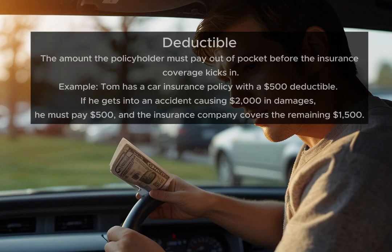Deductible: the amount the policyholder must pay out of pocket before the insurance coverage kicks in. Example: Tom has a car insurance policy with a $500 deductible. If he gets into an accident causing $2,000 in damages, he must pay $500 and the insurance company covers the remaining $1,500.